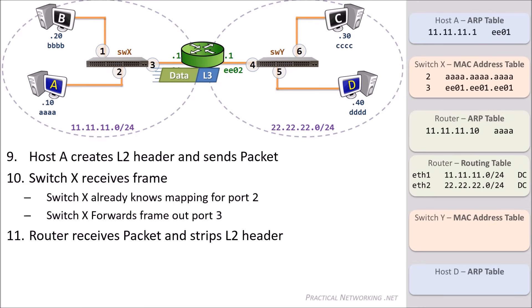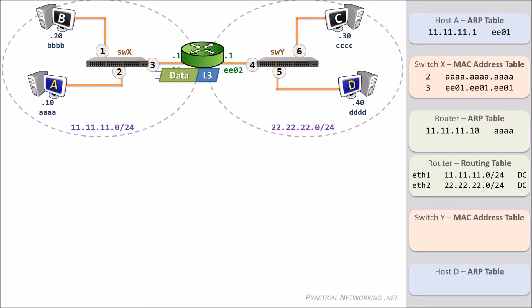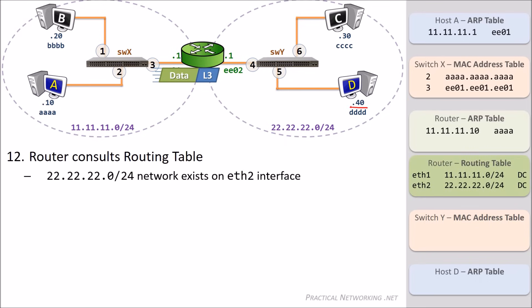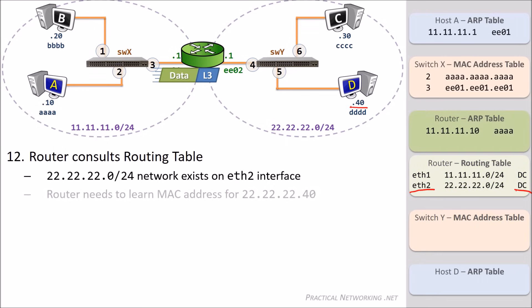When receiving the packet, the router will strip the Layer 2 header — its purpose was to get the packet from Host A to the router, and that job is done. Now the router needs to figure out where to send this packet next. It takes a look at the Layer 3 header and sees that this packet is destined to IP 22.22.22.40. The router consults its routing table and determines that this packet needs to go out its Ethernet 2 interface. Since the router is directly connected to this network, it knows that the packet must be delivered to its final destination, Host D.